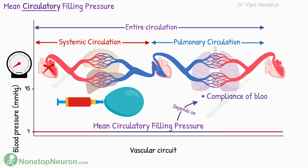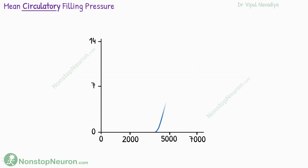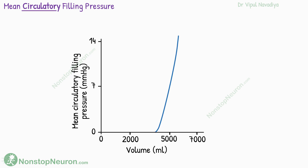This pressure depends on the overall compliance of all blood vessels and blood volume. This graph shows the relationship between blood volume and mean circulatory filling pressure. At a normal blood volume of about 5 liters, the mean systemic filling pressure is about 7 mmHg. If blood volume increases, the pressure increases; and if volume decreases, the pressure also decreases.